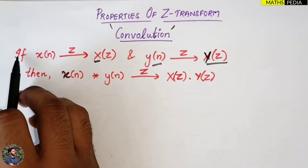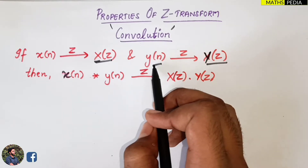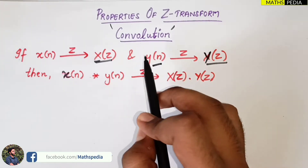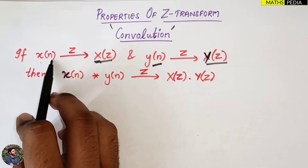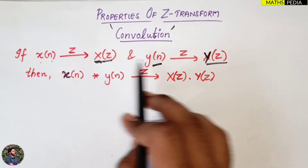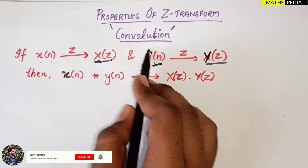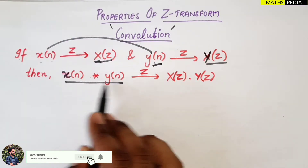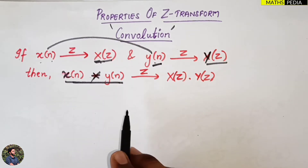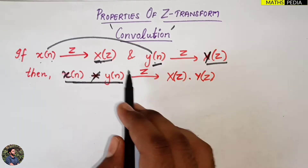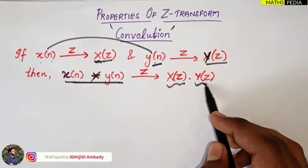The definition is: if X(n) has Z-transform X(Z), and another signal Y(n) has Z-transform Y(Z), then the convolution of these two signals — X(n) convolved with Y(n) — has a Z-transform equal to X(Z) into Y(Z). This is what we have to prove.